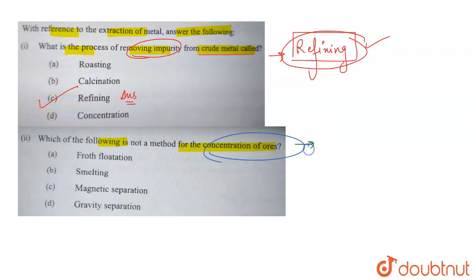It is basically a process used to separate the gangue particles. The gangue particles are impurities. It is used to separate the gangue particles from ores. This method is what we call the concentration of ores.